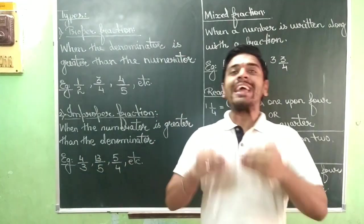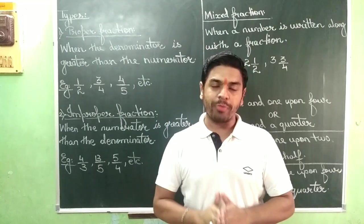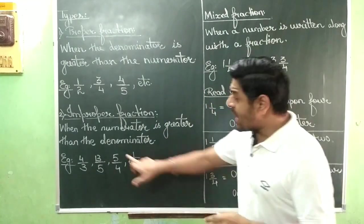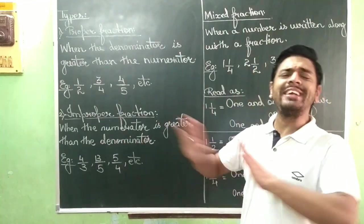Such a fraction is improper. Improper fraction means that the numerator is greater than the denominator.